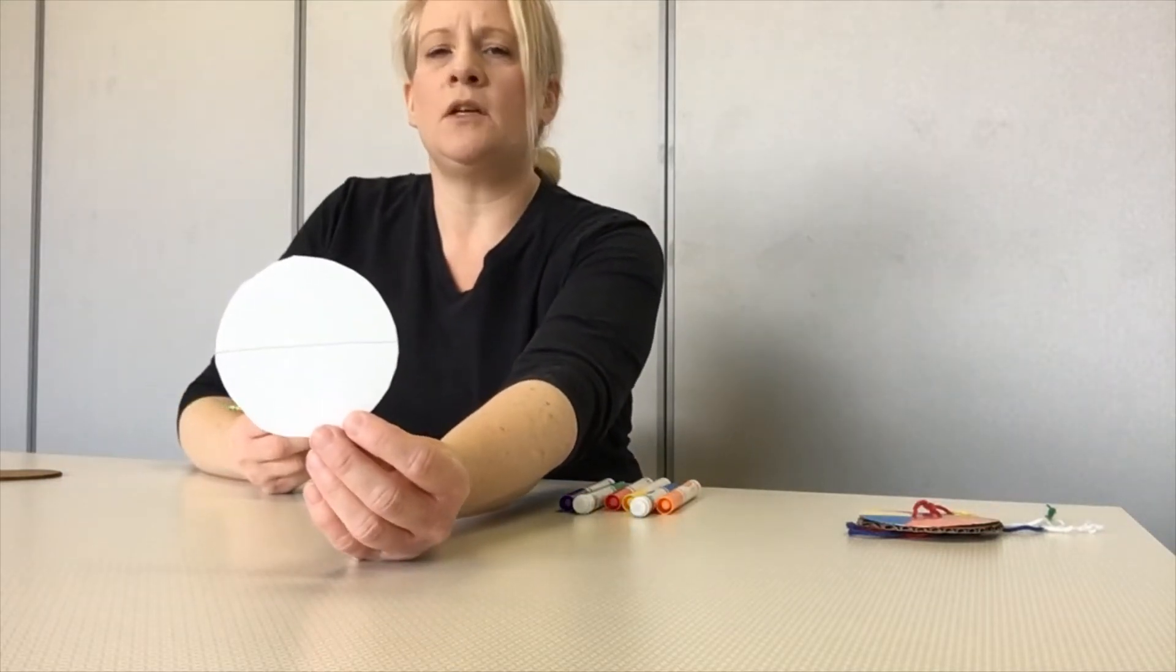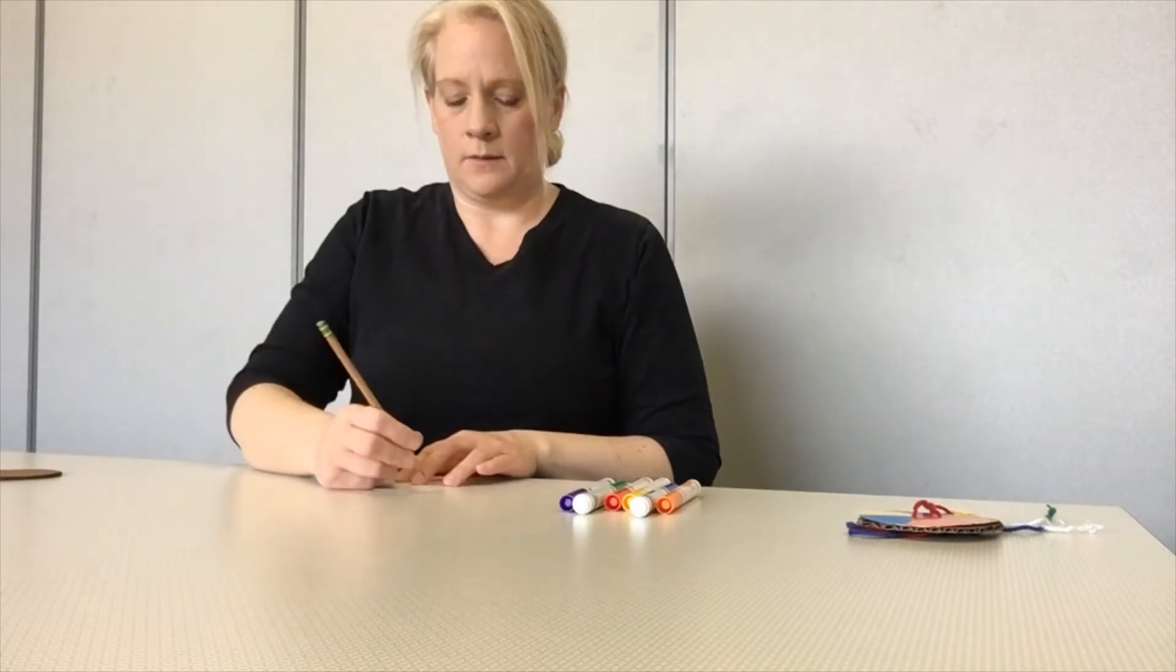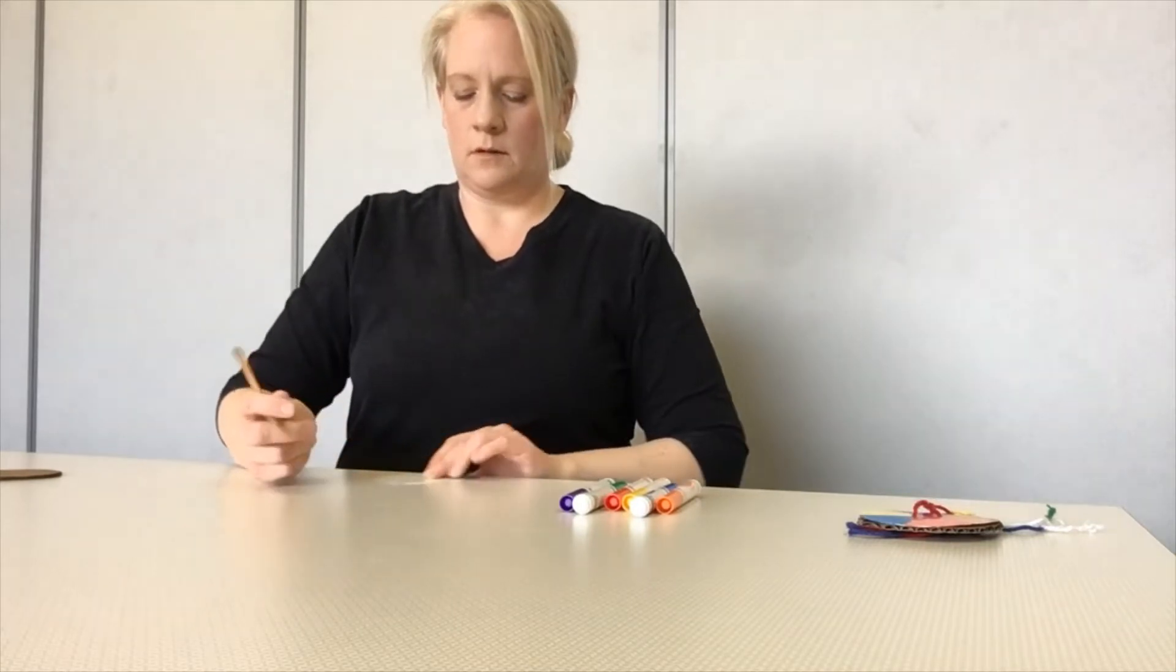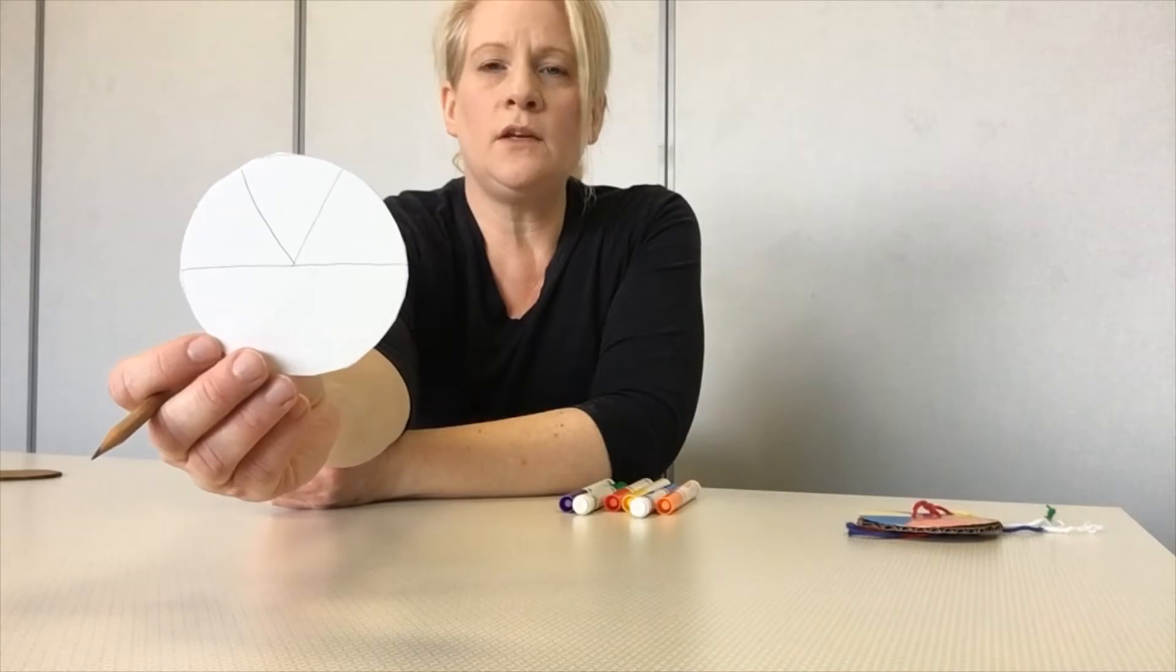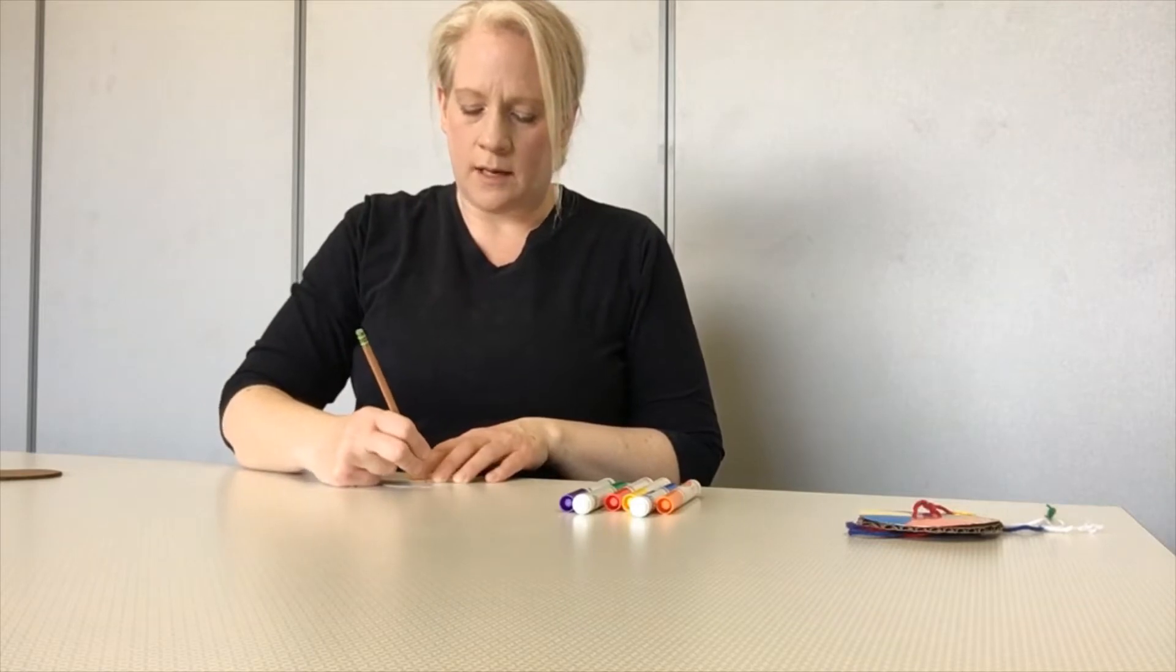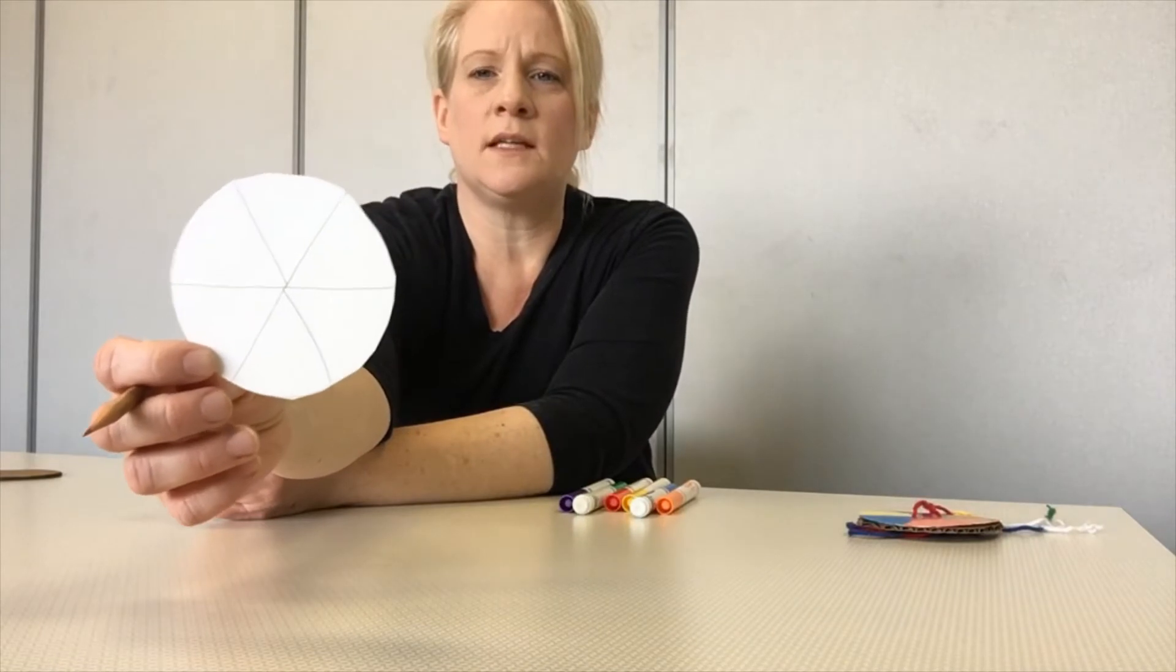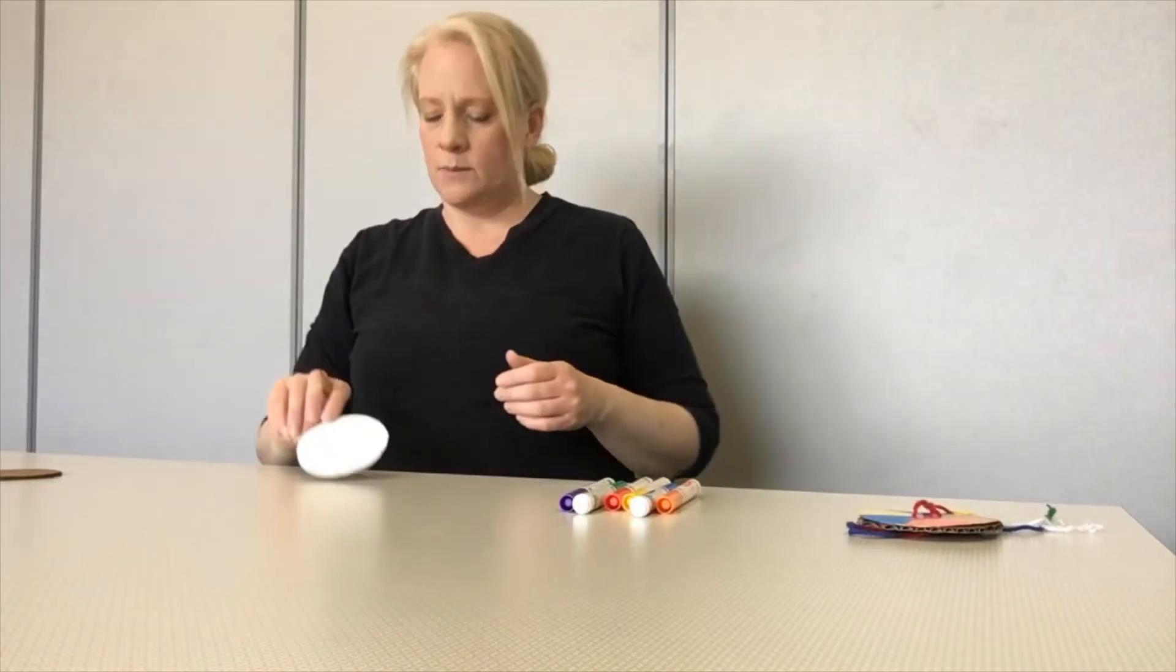Now next thing I'm gonna do is I'm gonna make a V shape on top of my line. So now you can see I made that V shape. So now there are three triangles on the top of my circle. I'm gonna flip it around and do the same thing on the other side. Make a V shape. So now you can see I did a V on top of my line and underneath my line. So now I have six triangles. It's like a pie. Six pieces of pie.